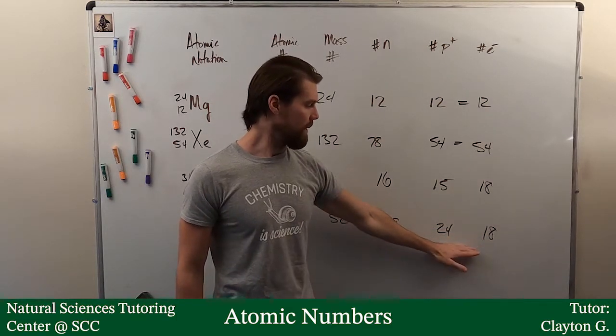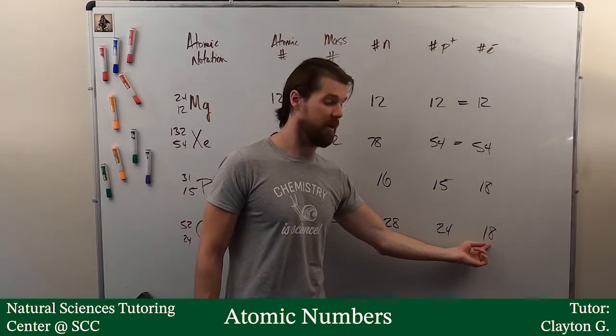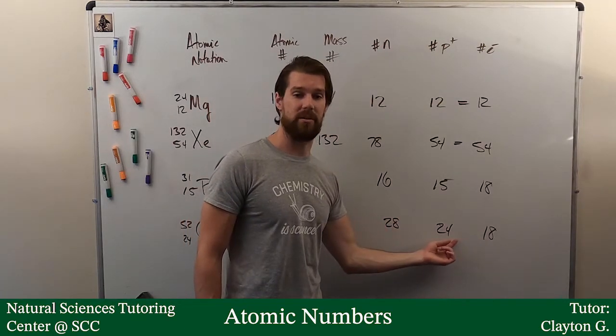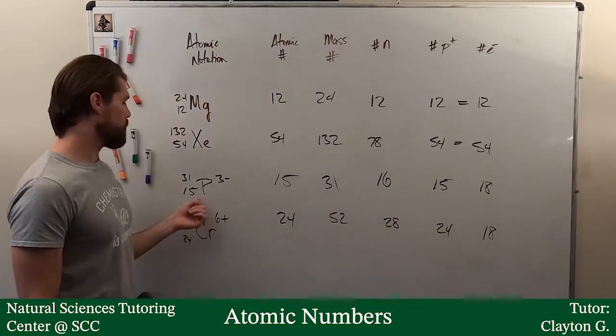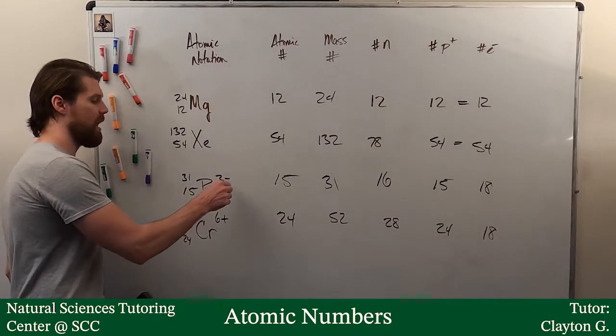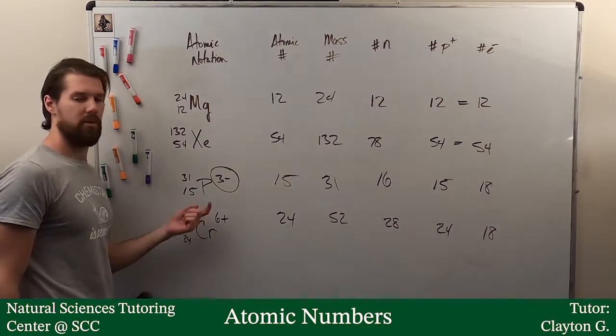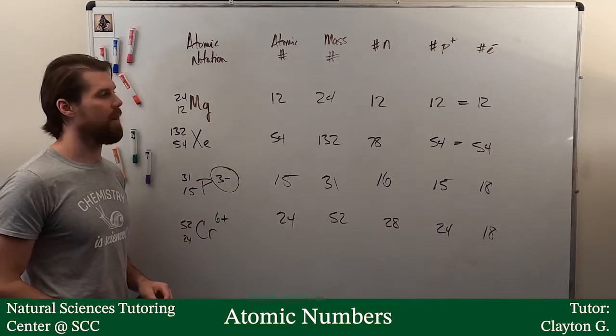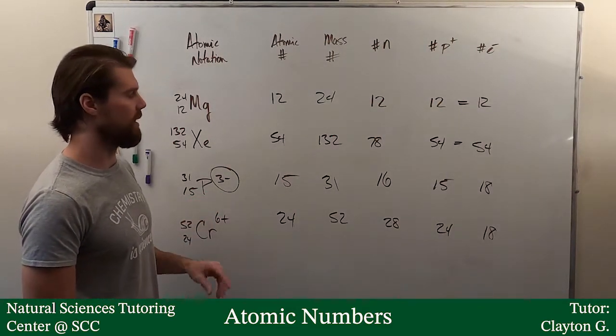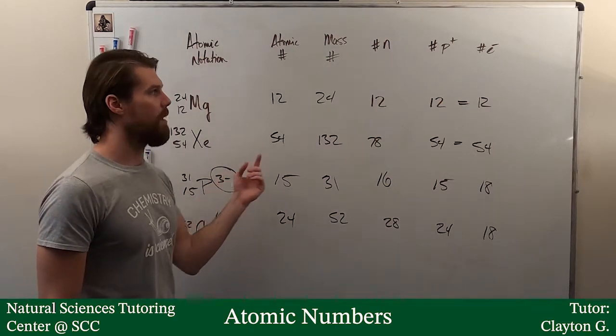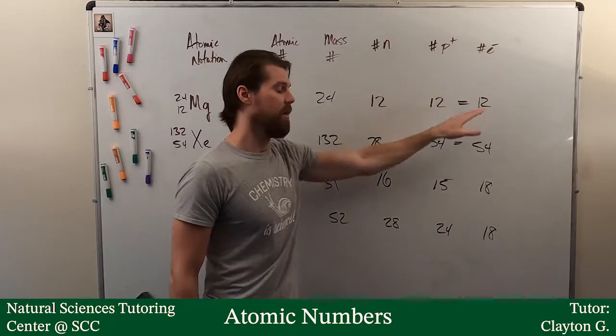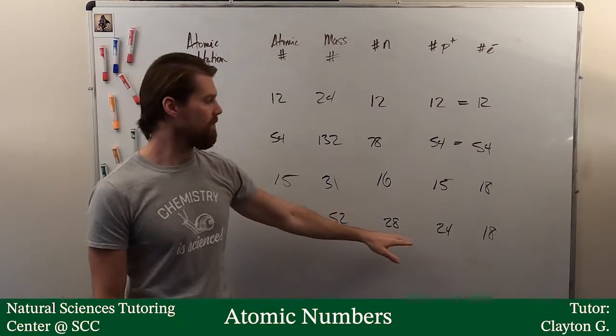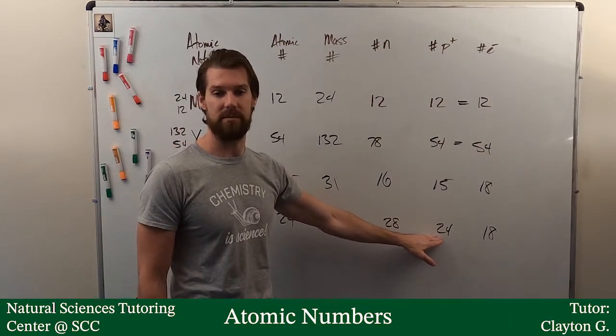And then the electrons, we will assume that they equal the protons unless something suggests otherwise. Here in this last one, we had to, we were given that information, it straight up said that. And this one though, how did we know it was an ion? That little three minus right there told us, oh wait a minute, we must have a charge on this thing. If it's negative, I must have more negative things. If it's positive, I must have more positive things. Protons.